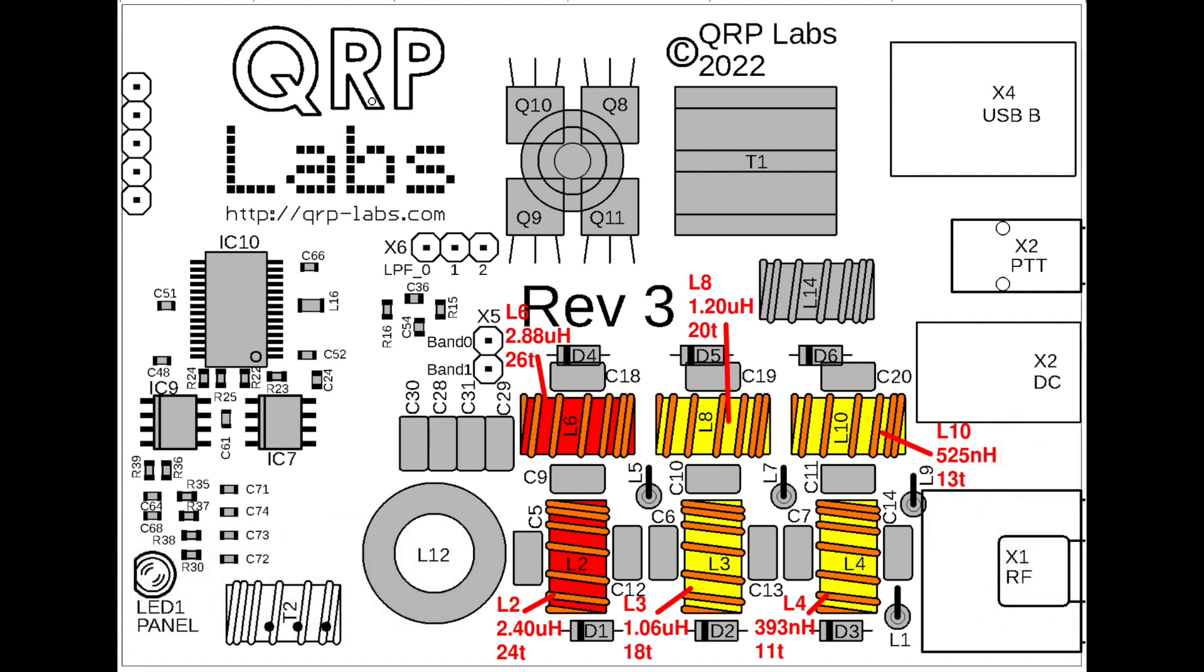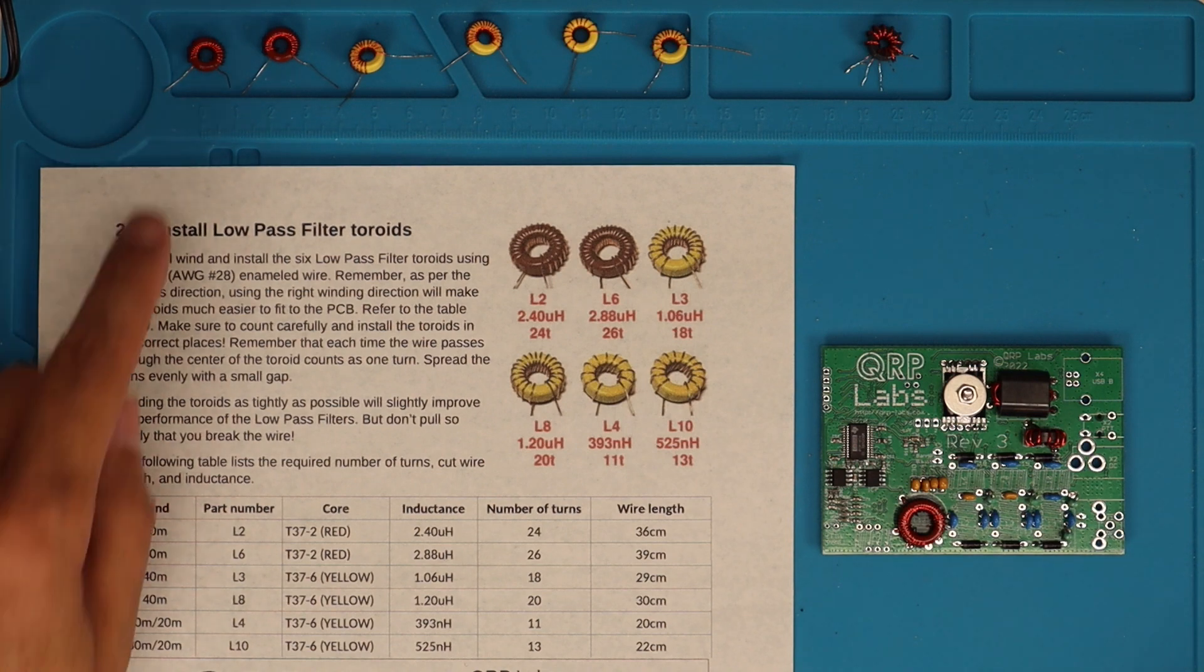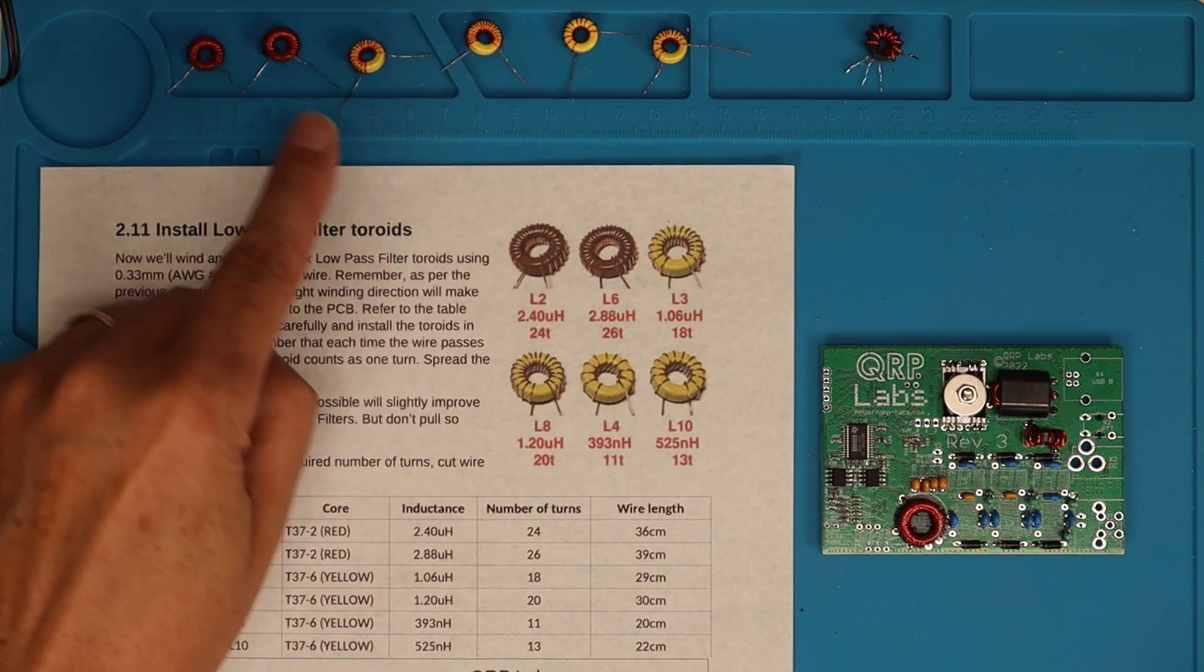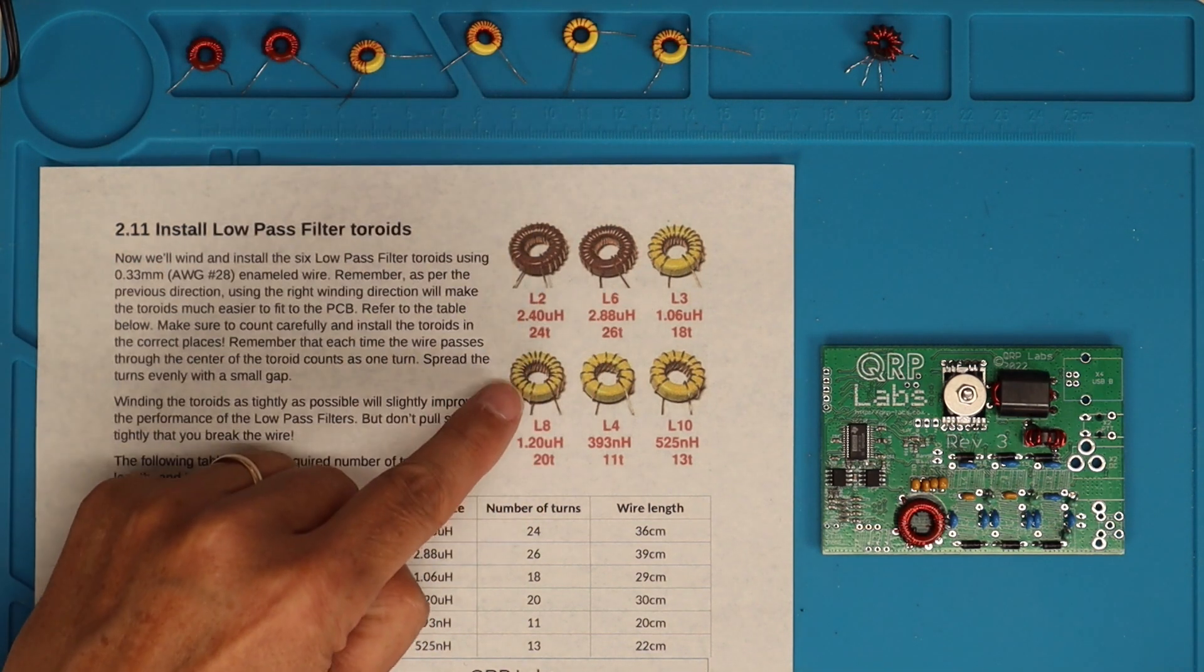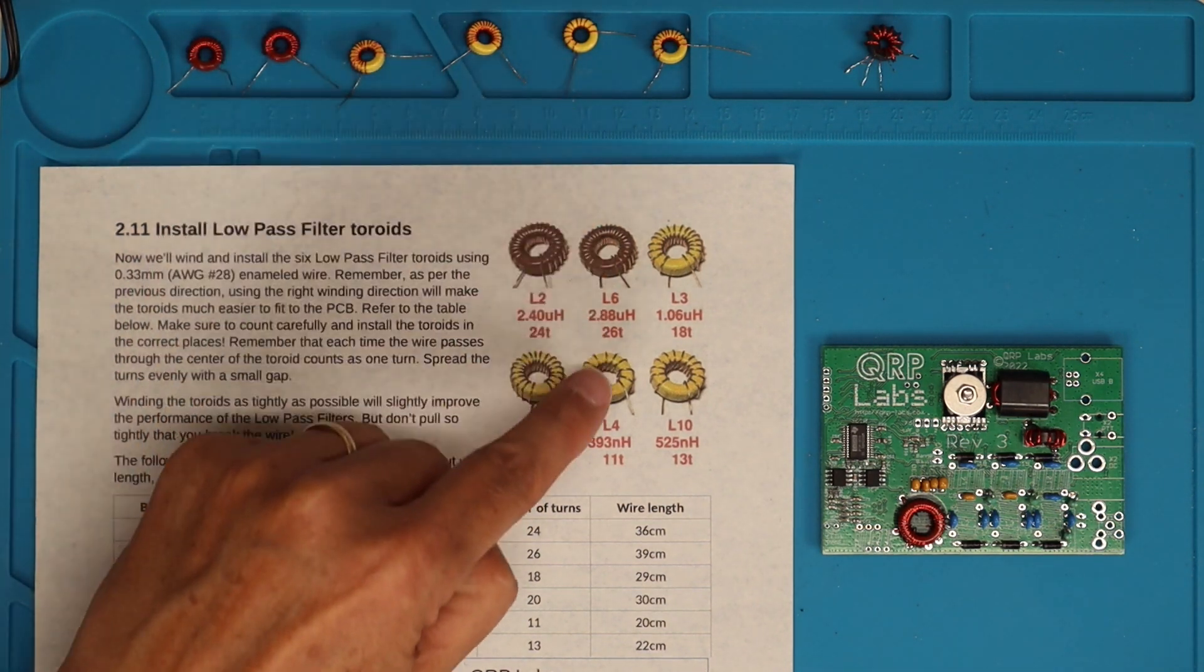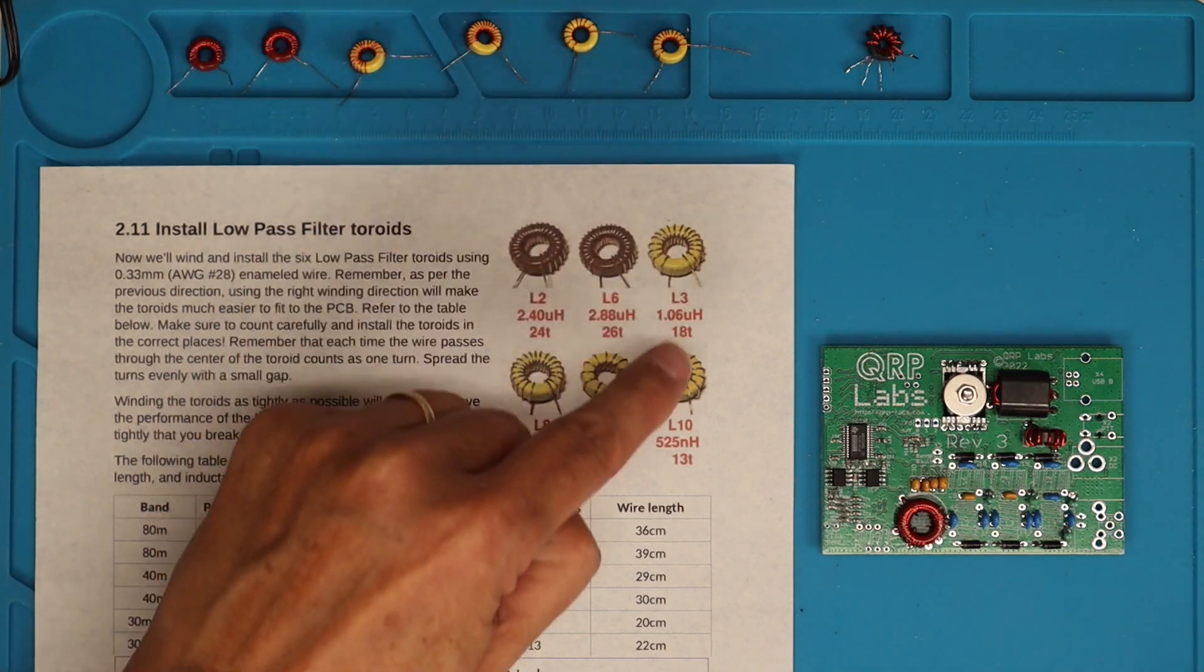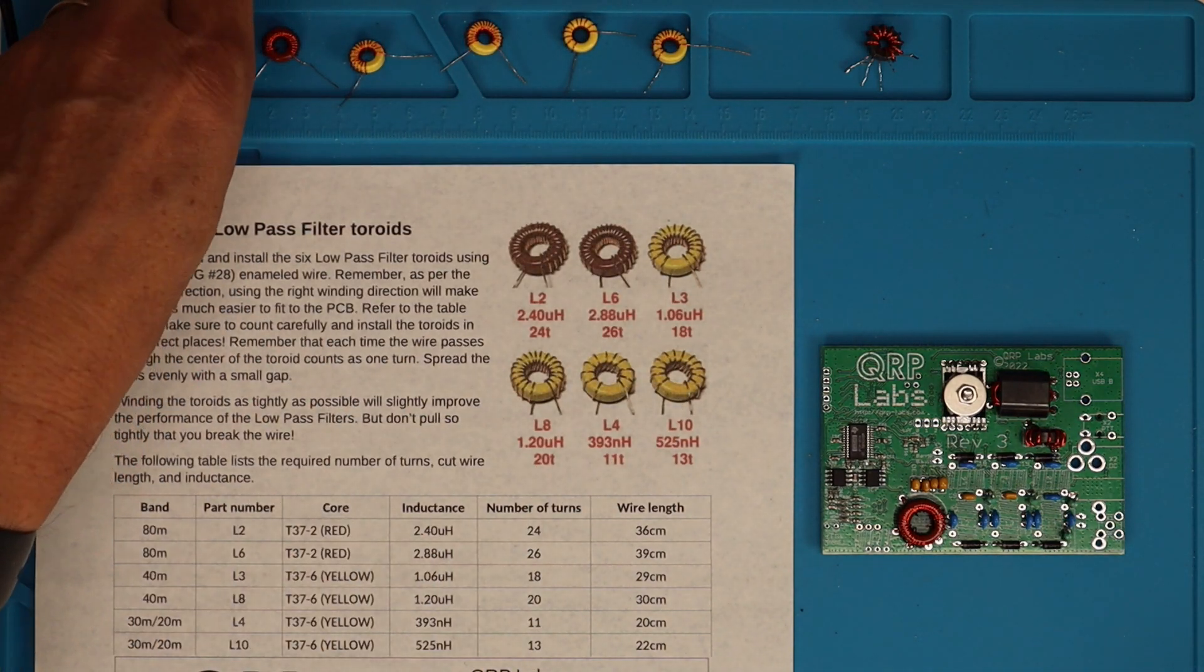Today we are going to do the rest of the inductors that make up the low pass filters. These are pairs of inductors that go along with their associated capacitors to make up the low pass filters for 80 meters, 40 meters, and then a third pair for 30 and 20 meters.